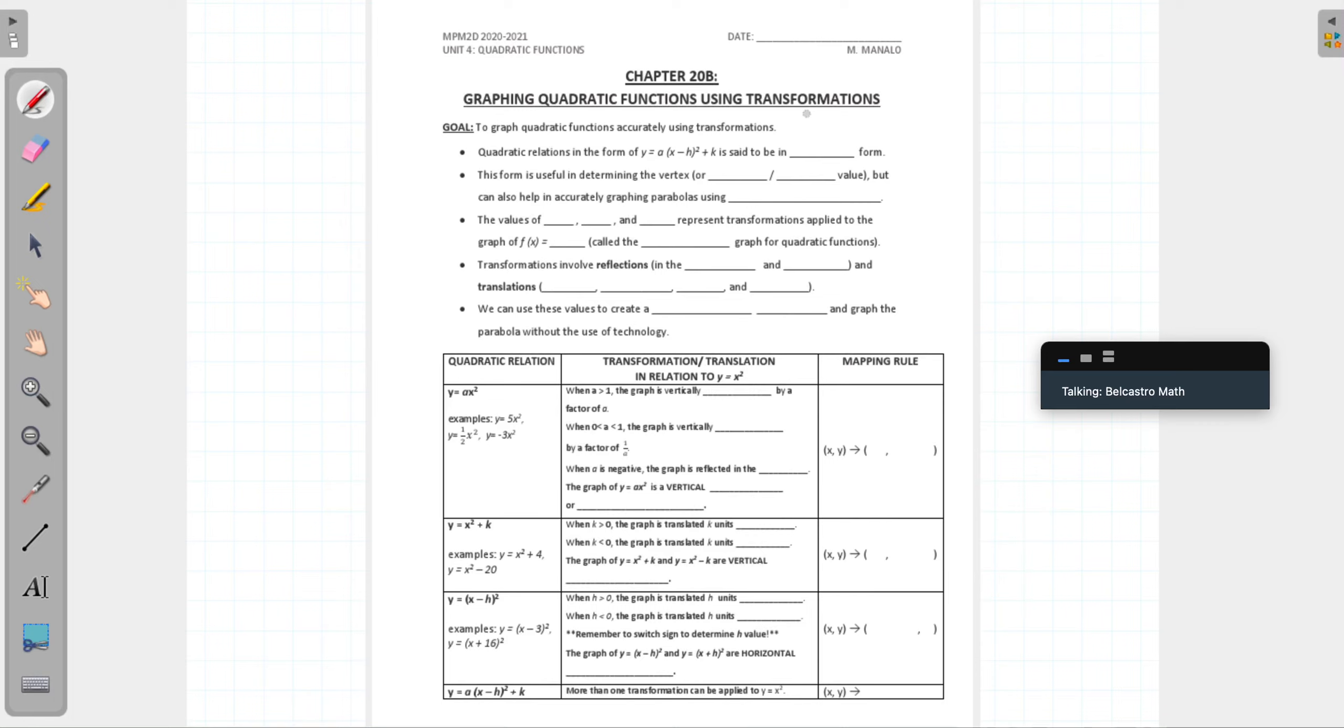Let's go through some definitions here. The space is a bit small for the writing, so I'll just write it on the side. A quadratic relation in the form y equals a(x minus h)² plus k is said to be, do you know what form that might be in? No, I don't remember exactly. Okay, so this one's called vertex form.